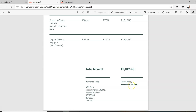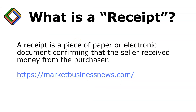A receipt is a piece of paper or electronic document confirming that the seller received money from the purchaser. When I deliver a service, I issue you an invoice, you pay the money to my bank account, and then I issue you a receipt saying that I have received money from you for that particular service or goods. That receipt shows that you have paid.